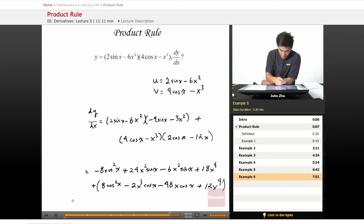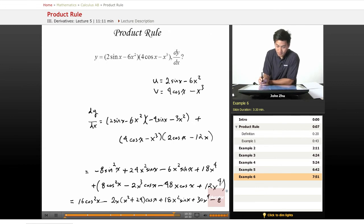So simplifying everything down, we get something like negative 8 sine squared x plus 18x squared sine of x plus 8 cosine squared x minus 2x cubed cosine of x minus 48x cosine of x plus 30x to the fourth. And there you have our answer.